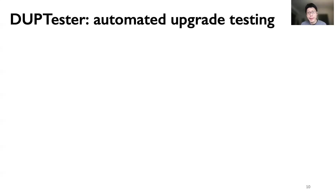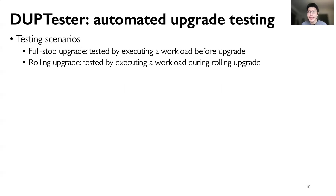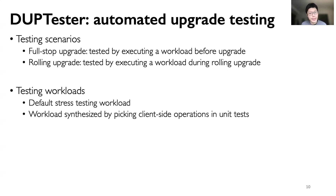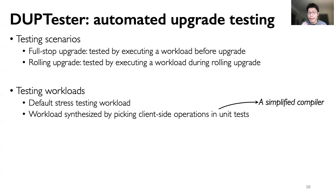Driven by these findings, we developed DUP tester to automatically test upgrades. Given two software versions, DUP tester tests two scenarios: first, a full-stop upgrade by executing a workload before the upgrade and loading the generated data on the new version; and second, a rolling upgrade by executing a workload during a rolling upgrade. DUP tester uses two types of testing workloads: it directly adopts the default workload in stress testing, and it synthesizes workloads by picking client-side operations from unit tests. The detailed technique involves a simplified compiler and can be found in our paper.